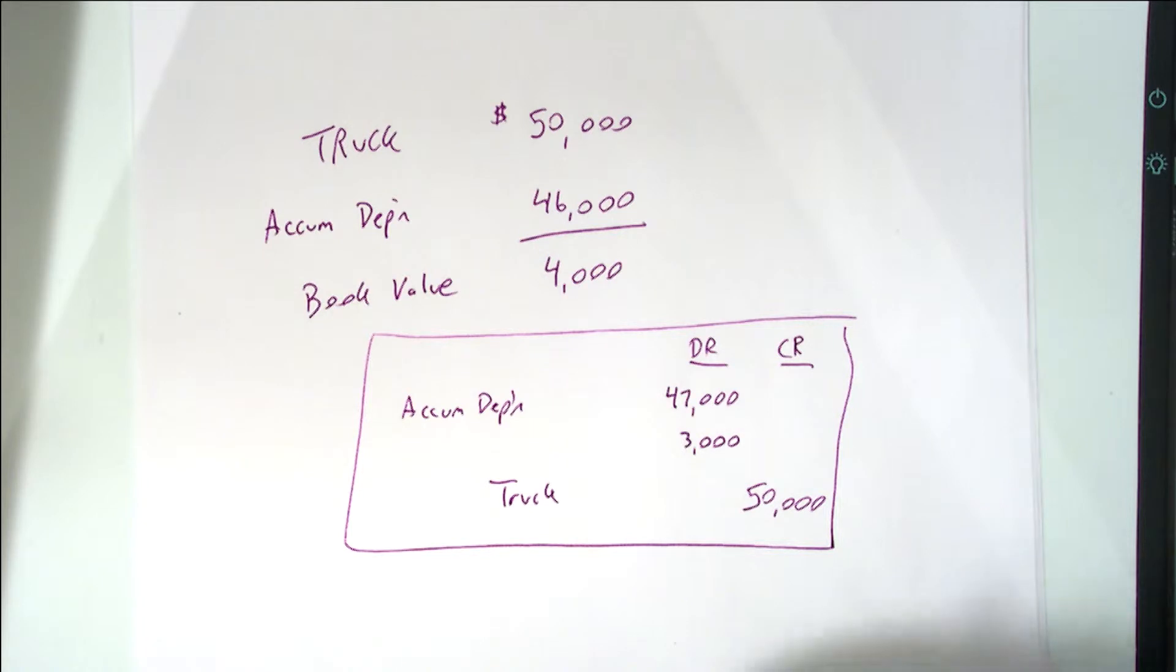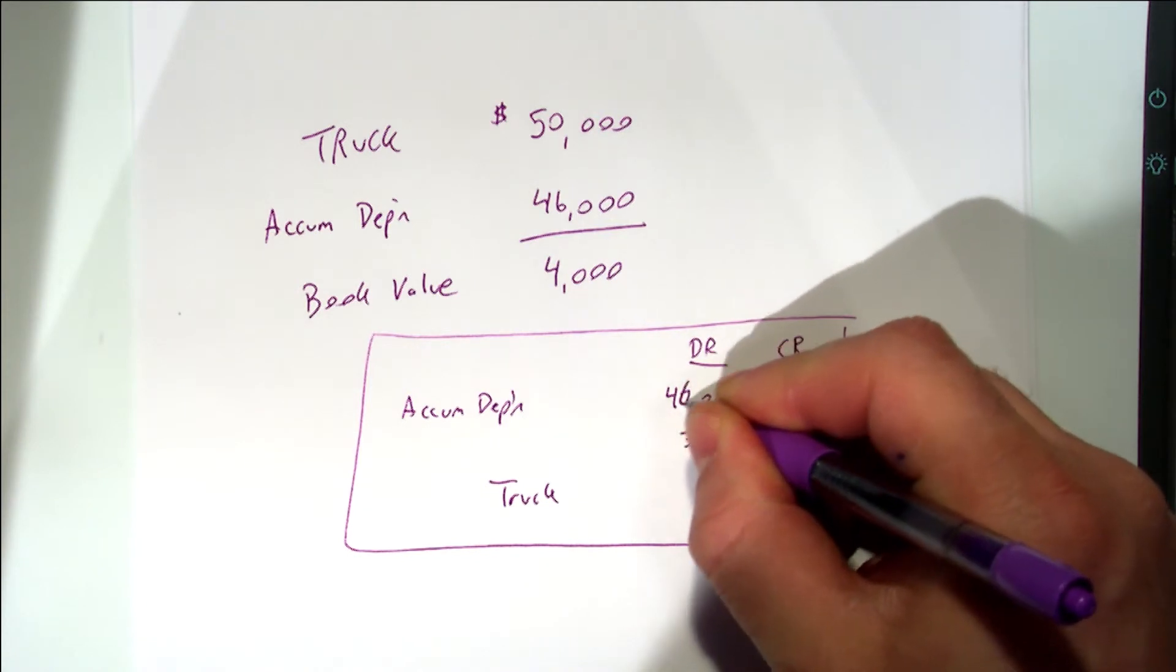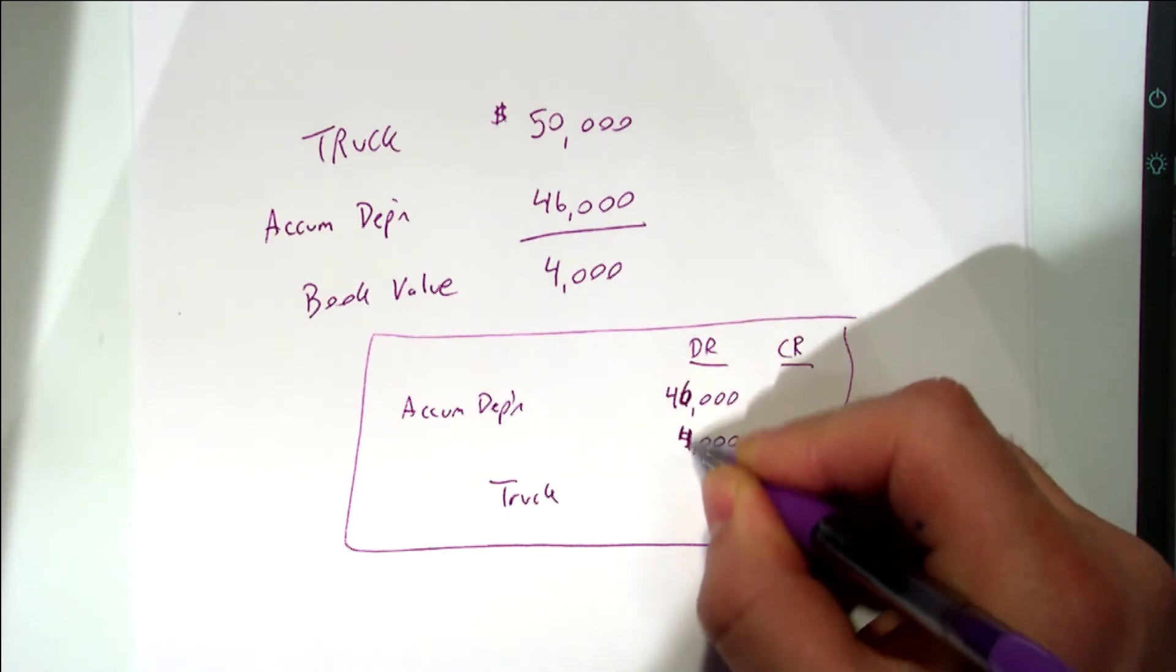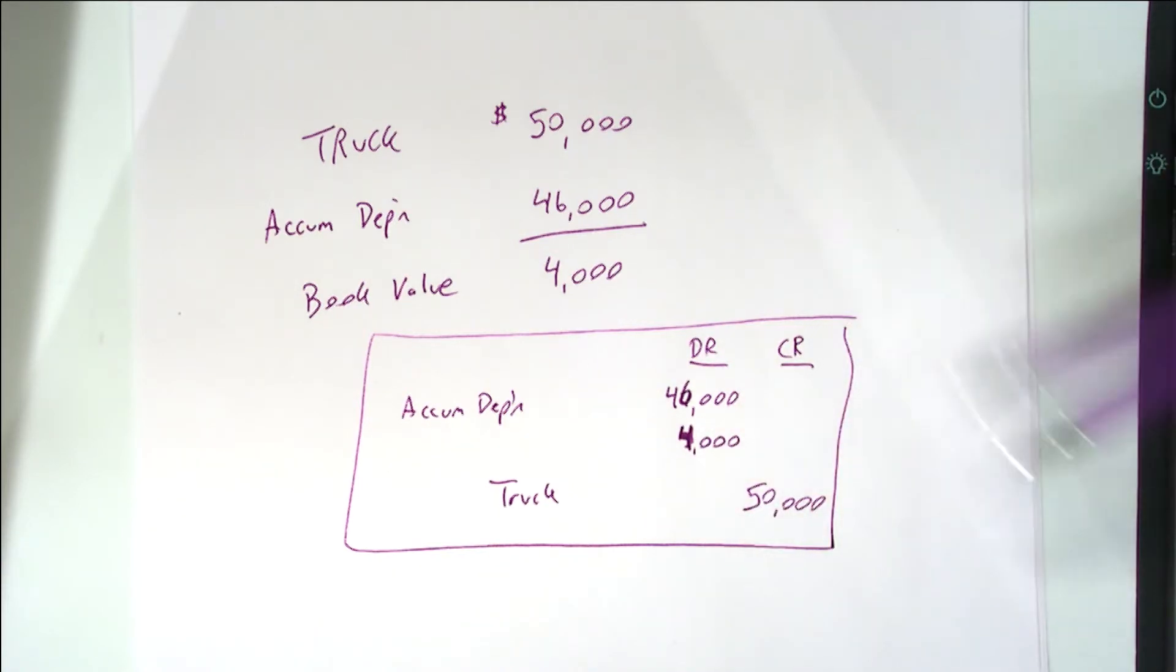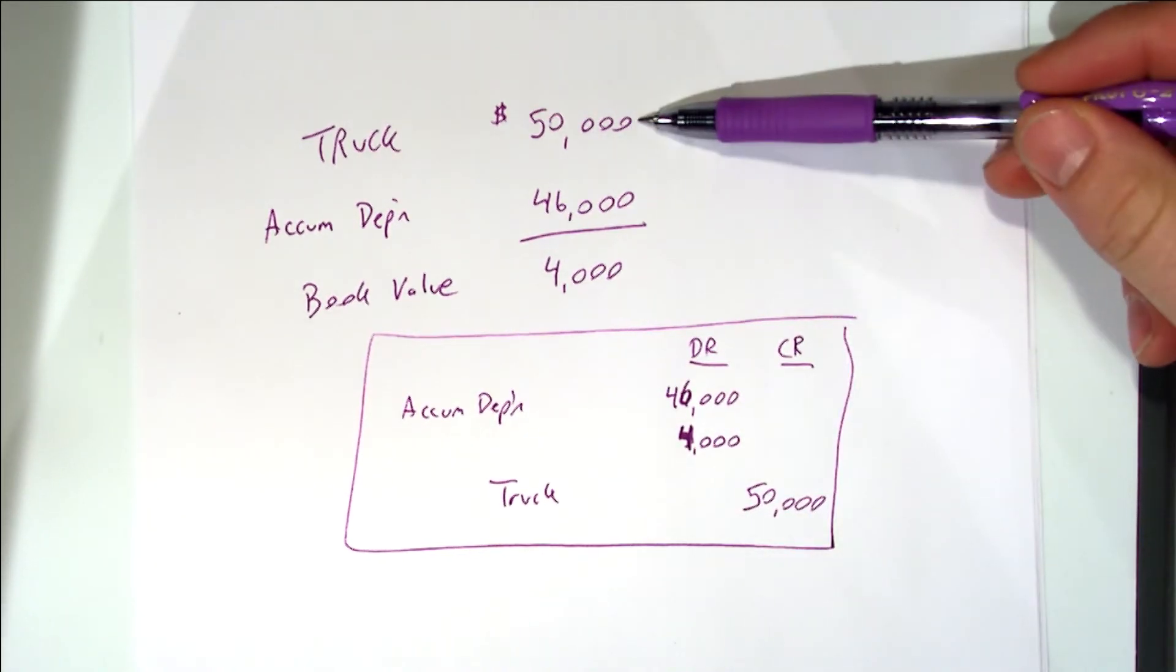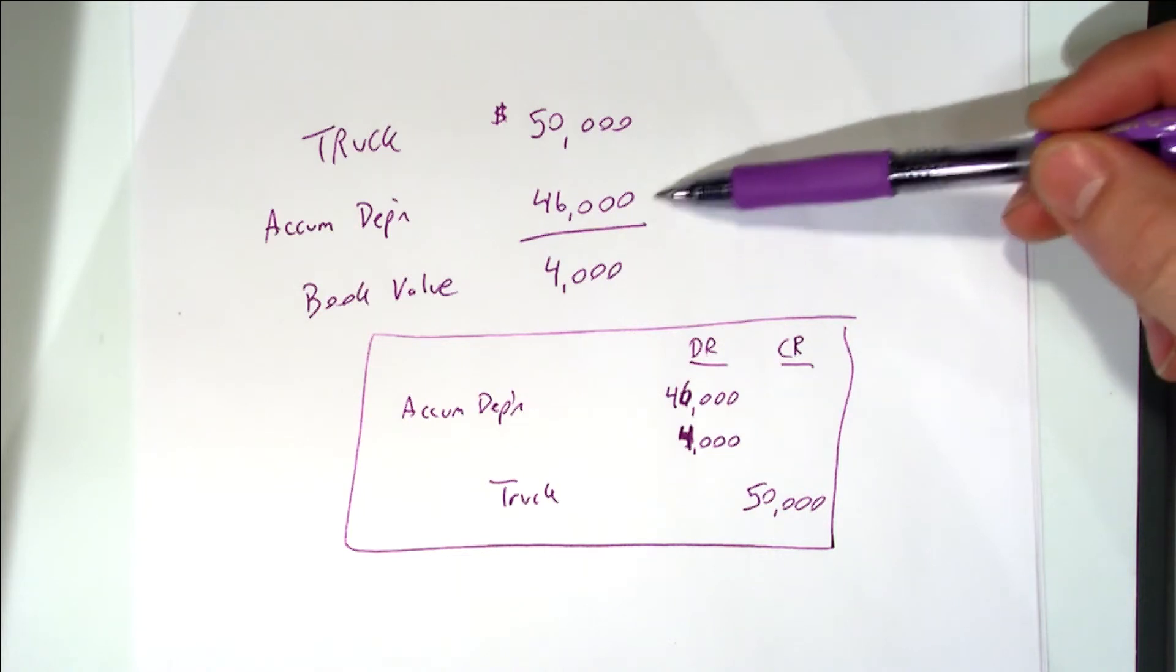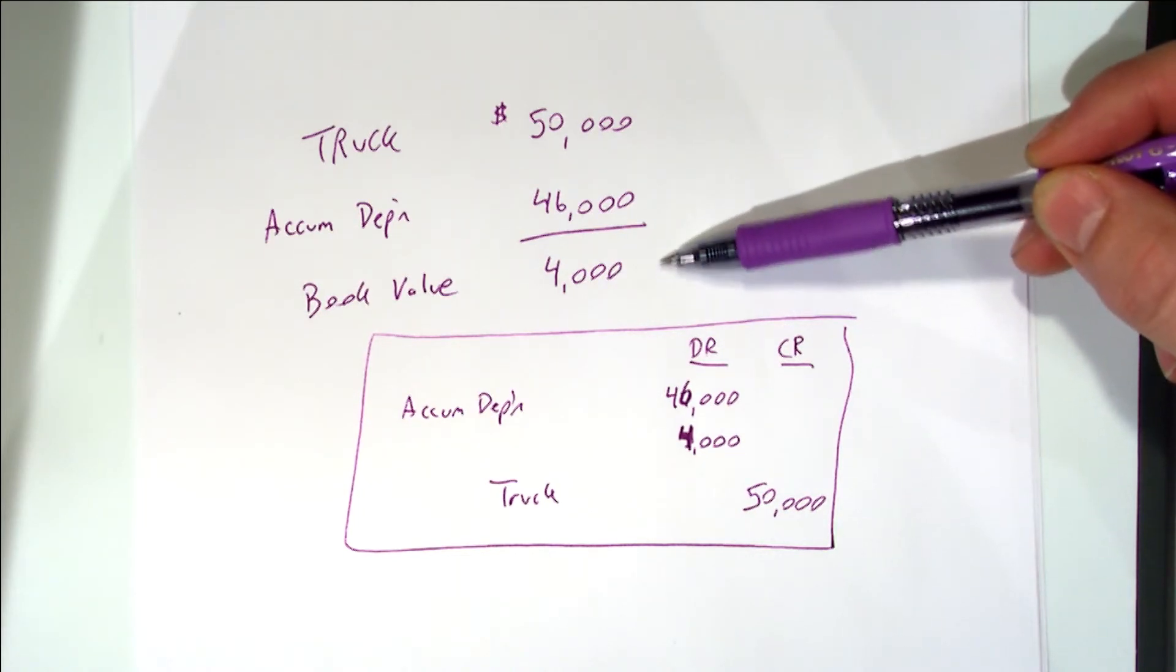How did you get to forty seven? Should it be forty six? Yes. I was testing you. This is forty six thousand. Sorry. I hate when I make mistakes. But I've made several this year. Okay. Let's go back in time. The truck is fifty thousand. The accumulated depreciation is forty six. It has a book value of four. Right?